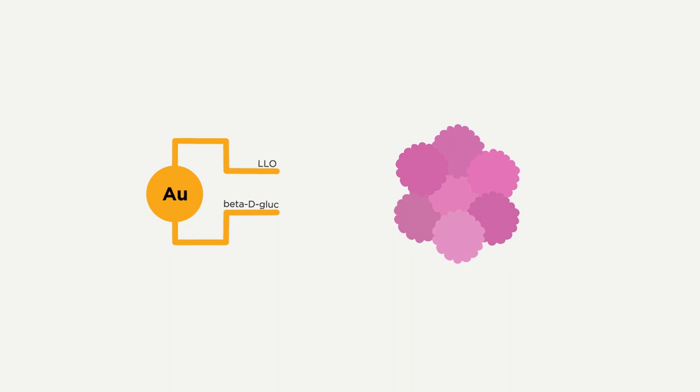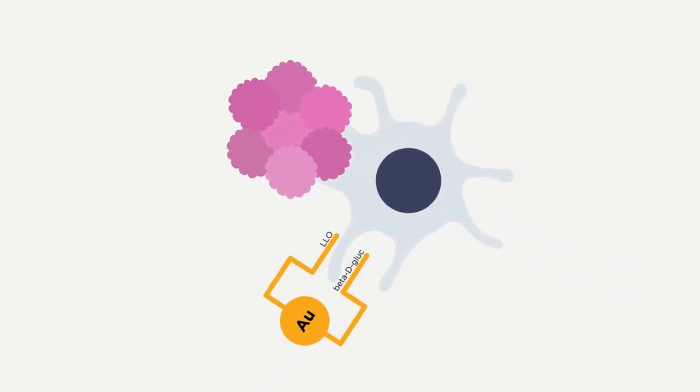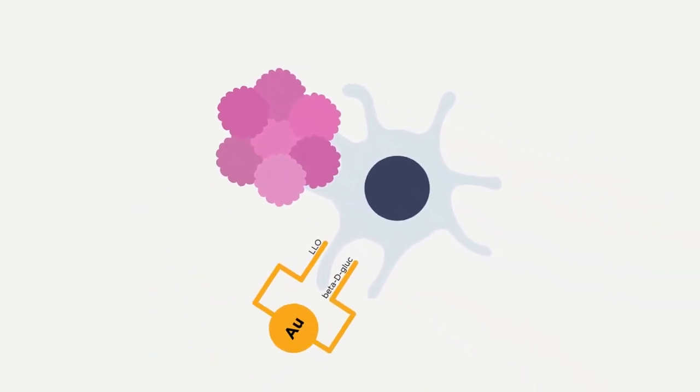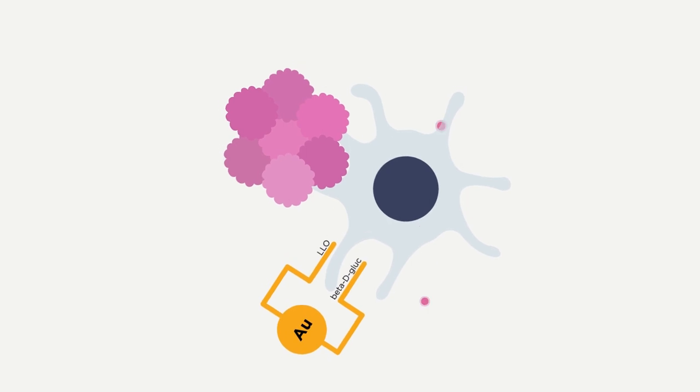Once it reaches the tumour, the nano-vaccine activates dendritic cells within the tumour. The dendritic cells release molecules, called cytokines, that attack and kill the cancer cells.